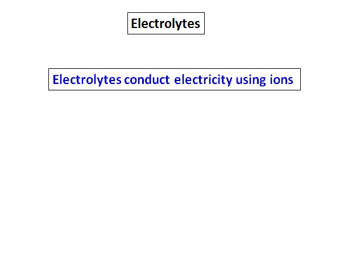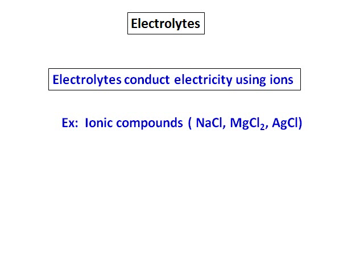What are electrolytes? Electrolytes conduct electricity and they use ions to do so. Ionic compounds are good electrolytes — for example, sodium chloride ionizes into sodium ions and chloride ions, and it is these ions that carry the current. The key difference is that ionic compounds carry current using ions, and only in aqueous solution, whereas metals conduct electricity using electrons and can do so in solid state as well.